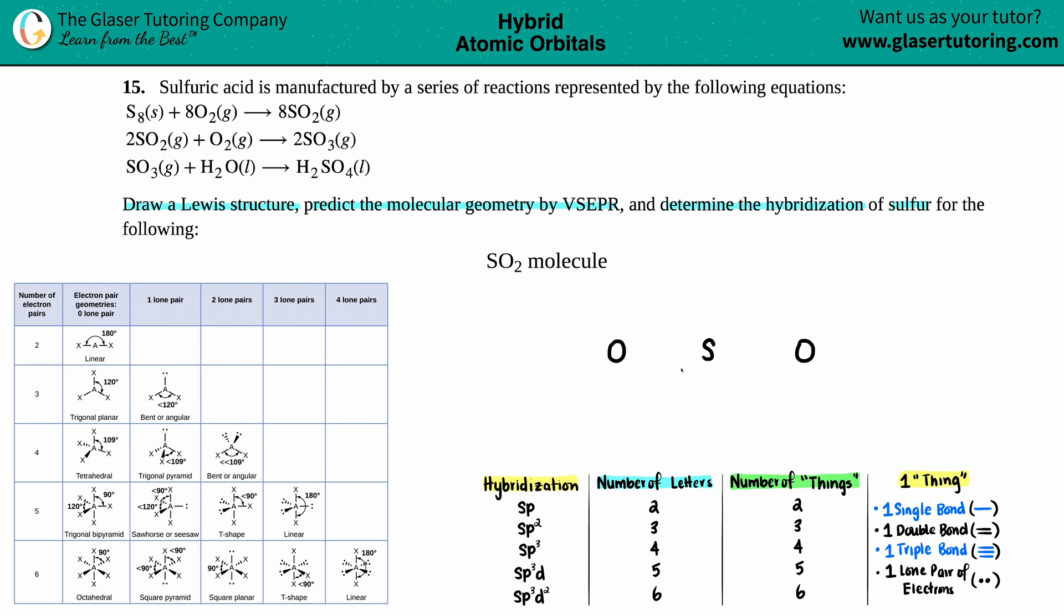Now put your valence electrons around the sulfur and the oxygen. The sulfur and oxygen, they're in the same group, right? Oxygen's on top, sulfur's on the bottom on the periodic table. They're both in group 16 or 6A. So they get six valence electrons. Maybe I'll say one, two, three, four, five, six. One, two, three, four, five, six.